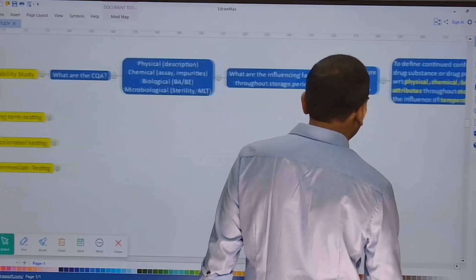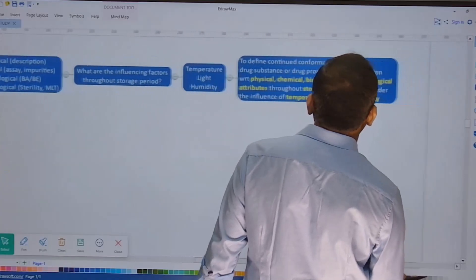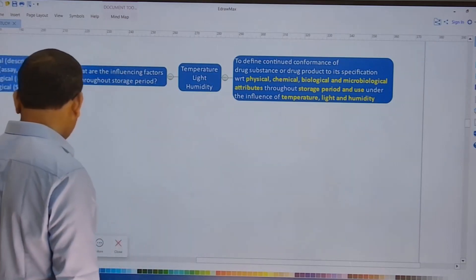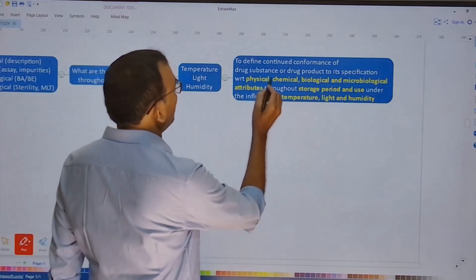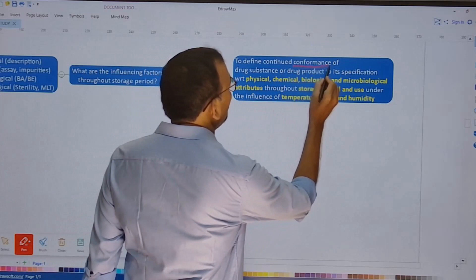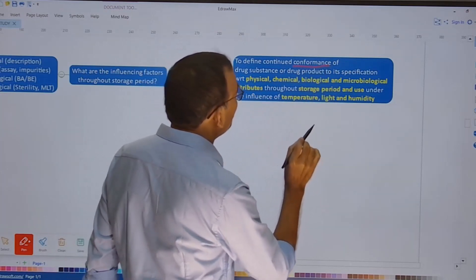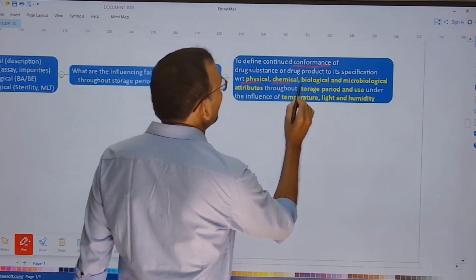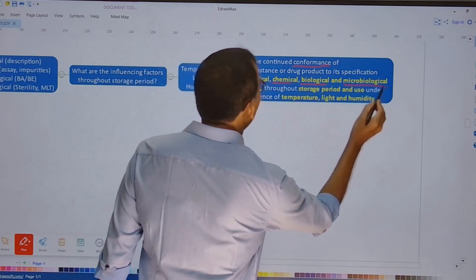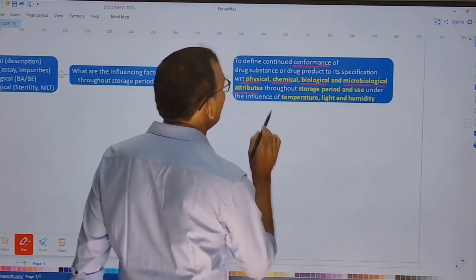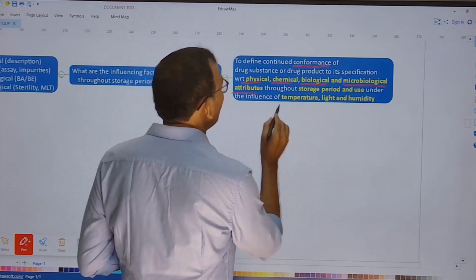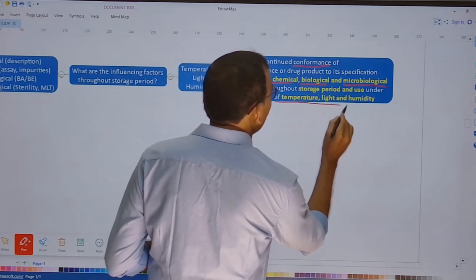And here is the definition now. So what is the purpose of conducting the stability study? The purpose of conducting the stability study is to define continued conformance of the drug substance or drug product to its specification with respect to physical, chemical, biological, and microbiological attributes throughout the storage period and use conditions under the influence of temperature, light, and humidity.